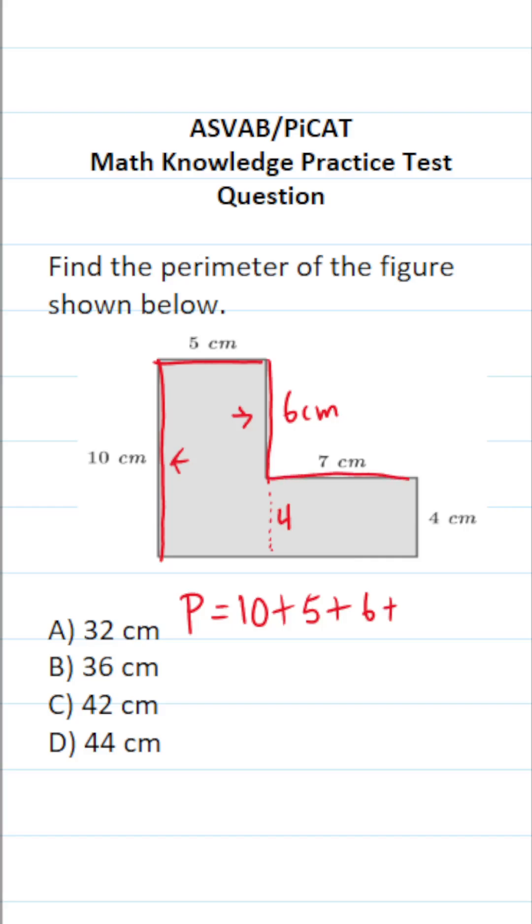Let's go ahead and add this side, which is 7, plus this side, which is 4. And finally, we don't know the length of this side, but we need to determine it. If it's helpful, we could draw this little dashed line here. Because we know this is 5 and we know this is 7. So 5 plus 7 is going to give us this final side length. 5 plus 7 is 12. So we know this is 12.